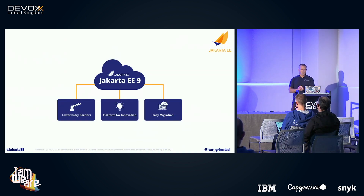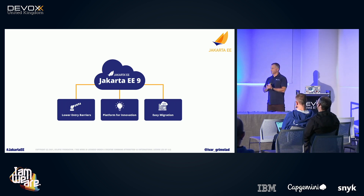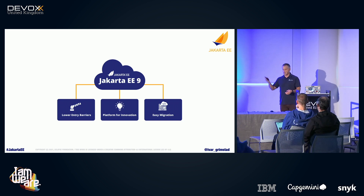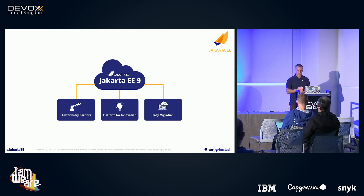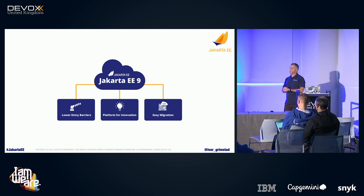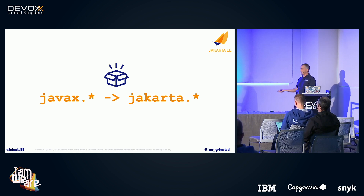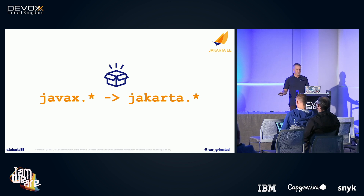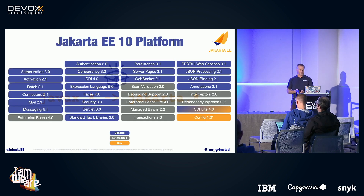To sum up: Jakarta EE 9 delivered lower entry barriers, established a platform for innovation, and made migration from previous versions easier. We've seen a lot of new and updated specifications. There are a couple of new specs coming, including a Jakarta gRPC spec that has been proposed and is out for community review — that will probably appear in Jakarta EE 11. The namespace has changed, and while we're sorry we had to do this, it has affected the entire industry. If you're using Java, you'll sooner or later be familiar with doing these migrations.